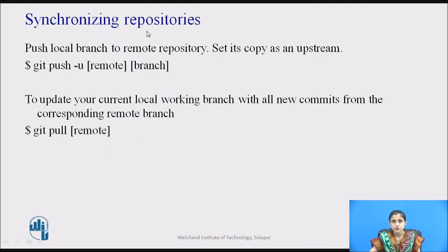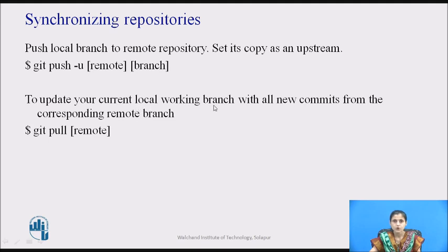For synchronizing the repositories, we use push and pull commands. To push a local branch to the remote repository and set its copy as an upstream, use: git push -u remote branch. To update your current local working branch with all new commits from the corresponding remote branch, use: git pull remote.